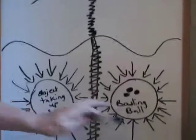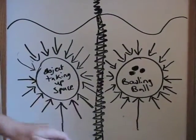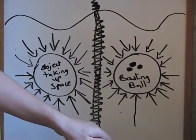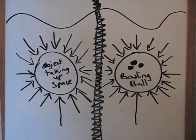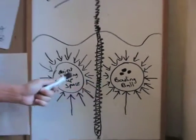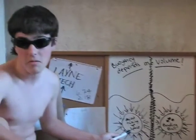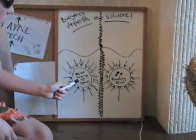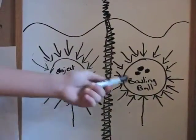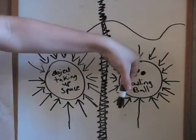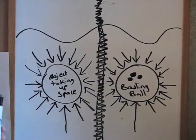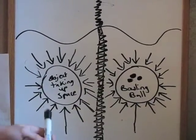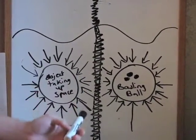I want to explain Archimedes' Principle. Let's say you have a bowling ball and an object taking up the same amount of space. Their buoyant force — the force from the bottom pushing them upwards — is going to be the same because they have the same volume. The reason the bowling ball sinks and the object with less mass floats is because of density: the bowling ball has a greater downward force from gravity going against the upward force. That's also why the side forces cancel out — hence why some objects float and others sink.